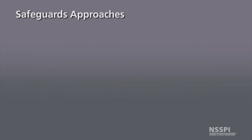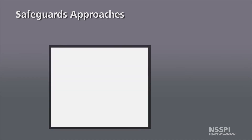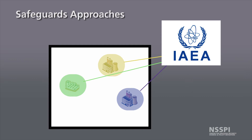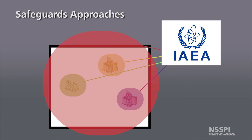In addition to being different for different states, safeguards approaches can also be different for different facilities within a state. Taking our fictional sovereign state with three nuclear facilities, the IAEA may develop a specific safeguards approach for the first facility that differs from the second, which also differs from the third. The IAEA can also consider a safeguards approach for the entire state in the case of integrated safeguards.